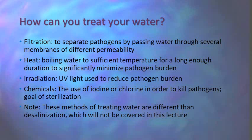Irradiation is the use of UV light to reduce pathogen burden. Chemicals are the use of iodine or chlorine in order to directly kill pathogens. When you're doing this the goal is to actually sterilize the water of all life forms. All of these are different than desalination — that is really the use of filtration to create potable water out of salt water. That's a whole entire topic on its own and we're not going to get into that right now.